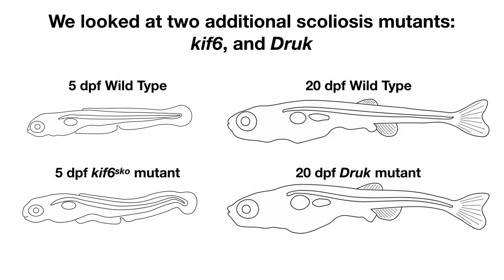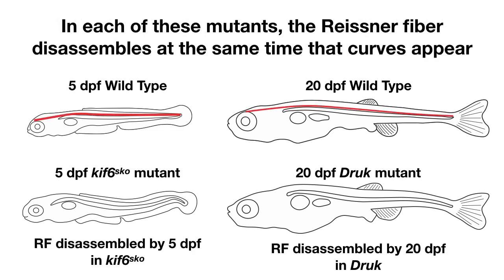Next we looked at two additional scoliosis mutants, KIF-6 and DRUK. KIF-6 starts to show curvatures at 3–5 days post-fertilization, while DRUK mutants don't show curves until about 3 weeks. In both cases, the Reissner fiber disassembled at the same time that curves appear — at 3 days in KIF-6 and at 20 days in DRUK mutants. These mutants show us that the Reissner fiber plays a continual role in spine morphogenesis.